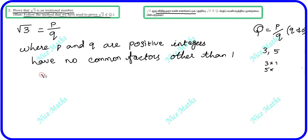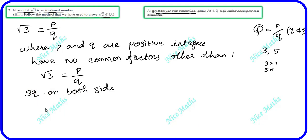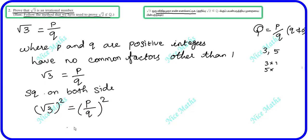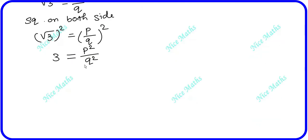Then, root 3 is equal to p by q. We square both sides: root 3 whole square equals p by q whole square, giving us 3 equals p squared divided by q squared.